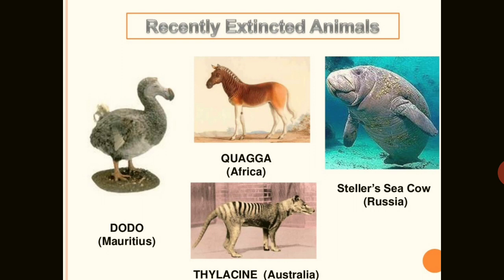Important examples of extinct species include the Dodo, a bird found in Mauritius; the Quagga, found in Africa; the Thylacine in Australia; Steller's sea cow found in Russia; and in India, three varieties of tigers — the Bali, Javan, and Caspian tigers — which disappeared in the last 20 years.